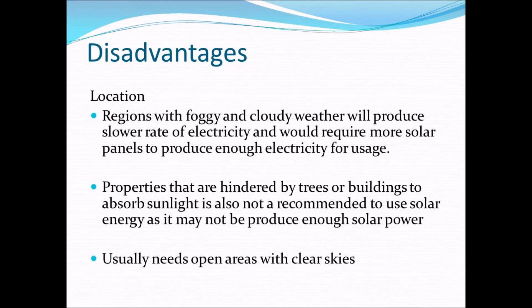In the disadvantages of solar energy, solar power requires space. Regions with foggy and cloudy weather will produce lower rates of electricity and would require more solar panels to produce enough electricity for usage. For example, solar panels are usually placed in open areas with clear skies, as properties hindered by trees or buildings prevent sunlight from entering the solar panel. This stops the solar panels from generating electricity.